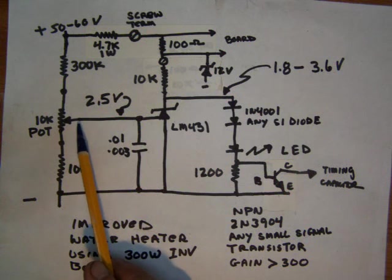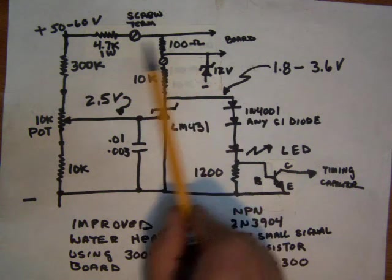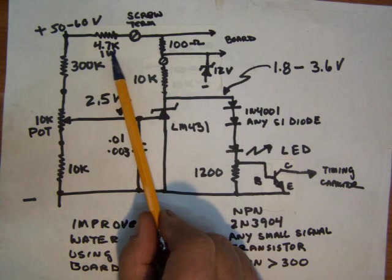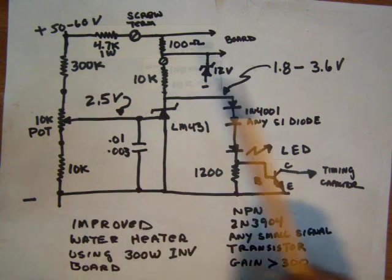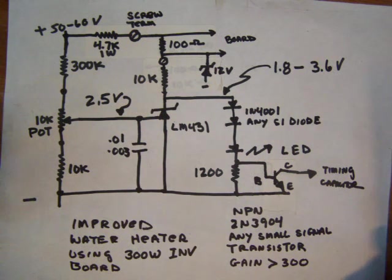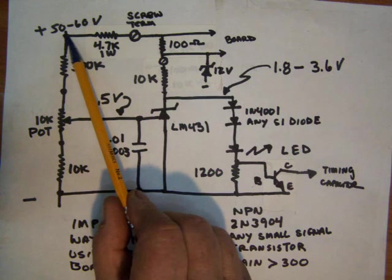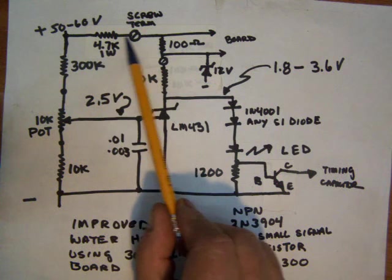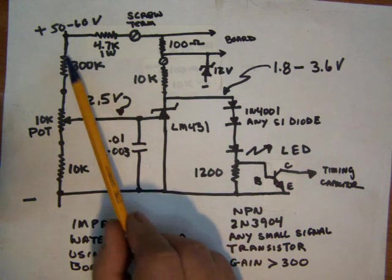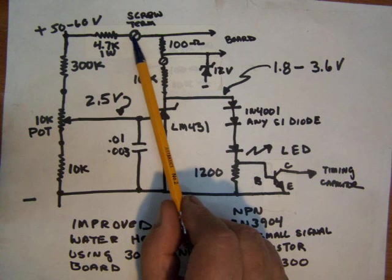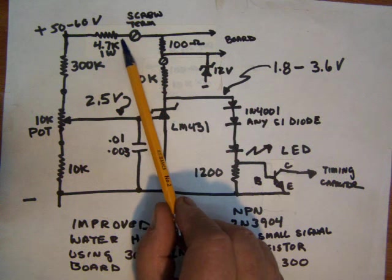So we provide power to the board with this 4.7K 1 watt resistor. You're expecting 50 to 60 volts - 50 volts would be a 36 volt string of panels, so 3 normally 12 volt panels would give you around 50 volts, or 2 grid tie panels would be 60 volts. We feed the voltage into that terminal.